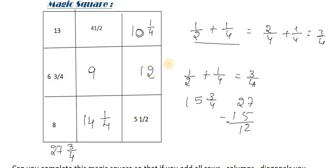27 minus 15 is 12. Now we will check all the rows. 13 plus 4 is 17, plus 10 is 27 and 3/4. Here I got 27 and 3/4. 12 plus 9 is 21, 21 plus 6 is 27 and 3/4.